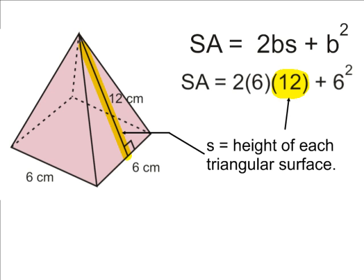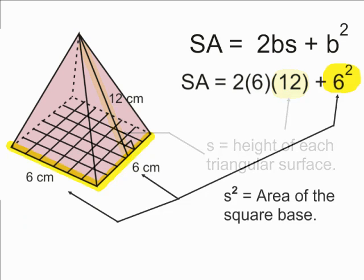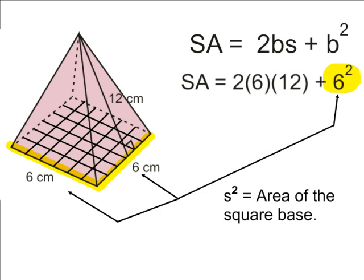Because each side of our square also represents the base of each of our triangles, the letter b will be the same when calculating the area for all of the four triangles as well as the area of the square base. Now we have to take the number 6 and plug it in for the variable b after our addition sign, and raise that to the second power. This will give us the area of the square base of this pyramid.